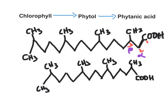When humans consume meat, milk, and milk products from ruminant animals, phytanic acid enters the body. A non-vegetarian western diet contains around 50–100 milligrams of phytanic acid compared to a vegetarian diet. When phytanic acid must undergo oxidation, normal beta oxidation cannot proceed because the beta carbon has a methyl group, which is a hindrance to beta oxidation.